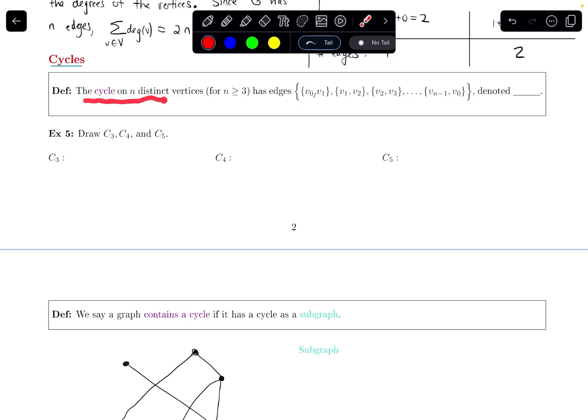The cycle on n distinct vertices, where n is greater than or equal to 3, has the following edges. The easiest way for me to explain what this means is by drawing some examples. I'll do that, and then I'll come back and return to what this definition is saying.